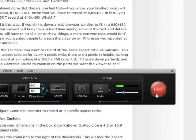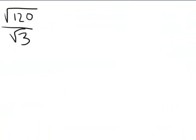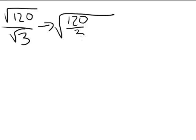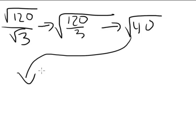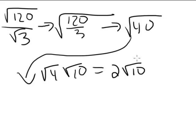Let's try one more: the square root of 120 divided by the square root of 3. Combine, divide, simplify. 120 divided by 3 is 40. The square root of 40 becomes the square root of 4 times the square root of 10, which is 2 radical 10. That's it for problems that do not involve coefficients — now let's make things a little more complicated.